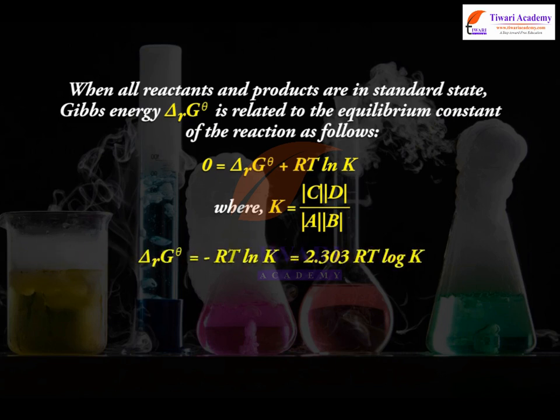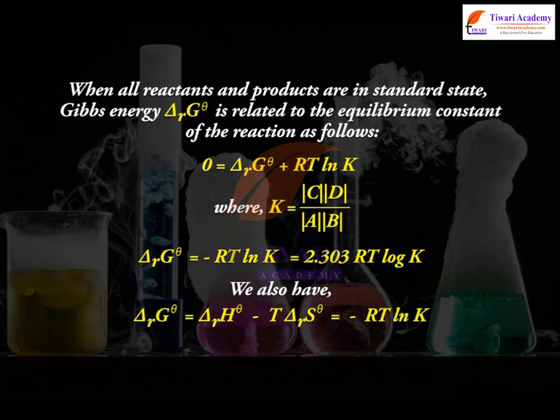Therefore, ΔrGθ = −RT ln K = −2.303 RT log K. We also have ΔrGθ = ΔrHθ − TΔrSθ = −RT ln K.